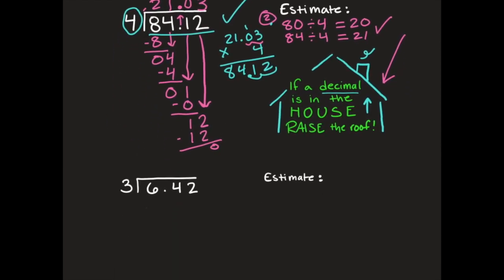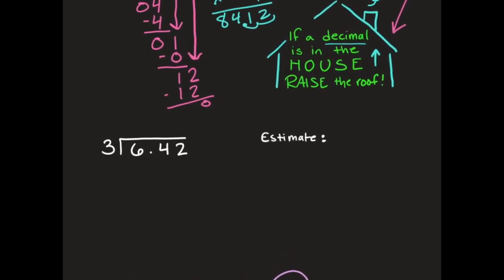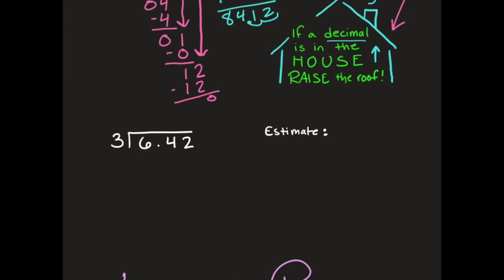Moving on to the second example — remember, if a decimal is in the house, raise the roof. I have 6 and 42 hundredths divided by 3, always reading right to left. For my estimate, 6 divided by 3 is a quick fact — that equals 2. So I know my quotient is going to be around 2.